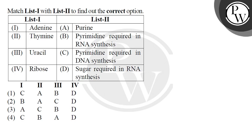Hello students, let's read the question. Match List 1 with List 2 to find the correct option. In List 1 we have been given adenine, thymine, uracil, and ribose, and in List 2 we have been given their properties.